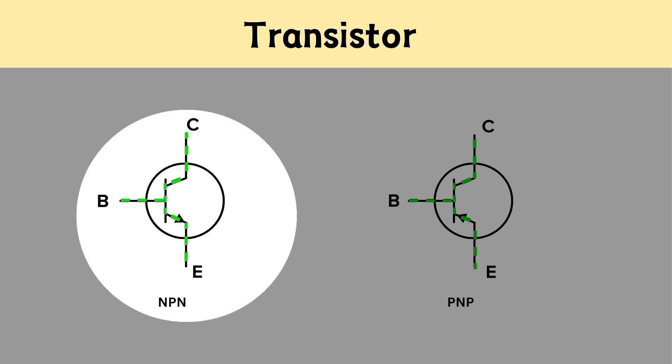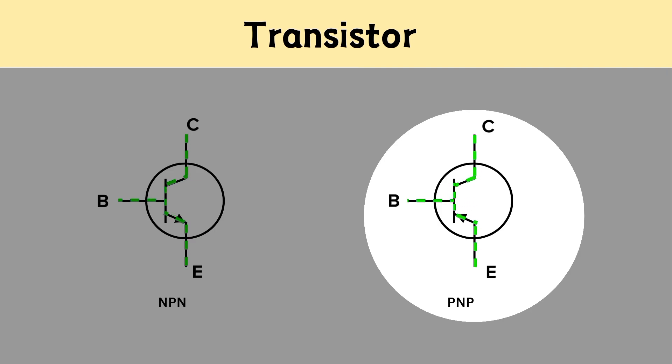In an NPN transistor, current flows from the collector terminal to the emitter terminal, while in a PNP transistor, it flows from the emitter terminal to the collector terminal.